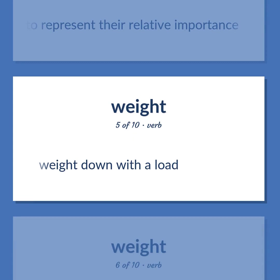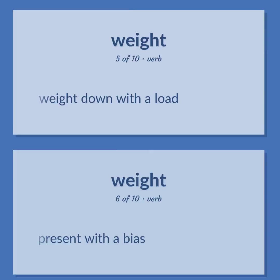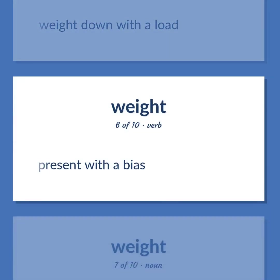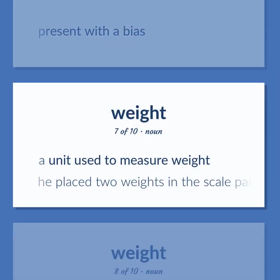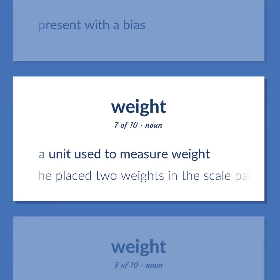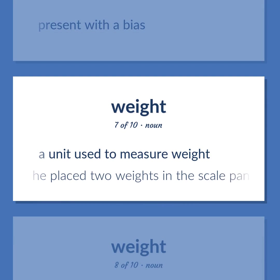Weight: To weight down with a load. To present with a bias. A unit used to measure weight. Example: He placed two weights in the scale pan.